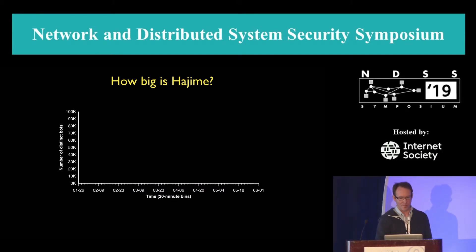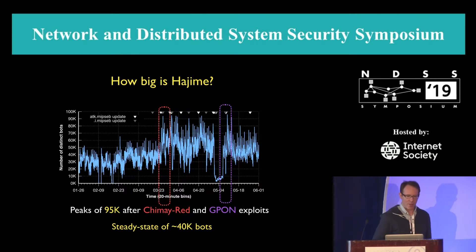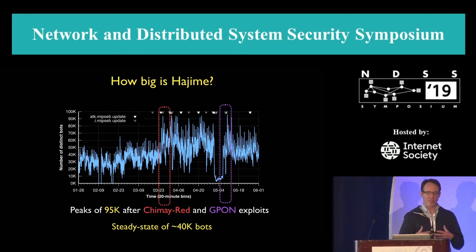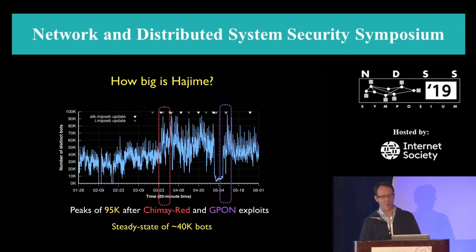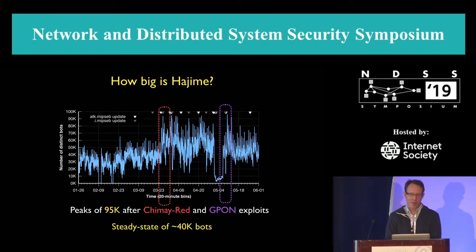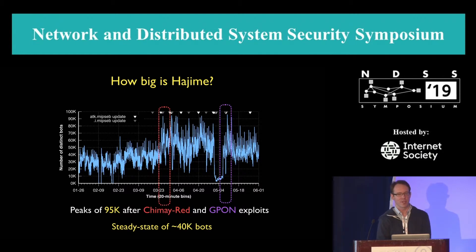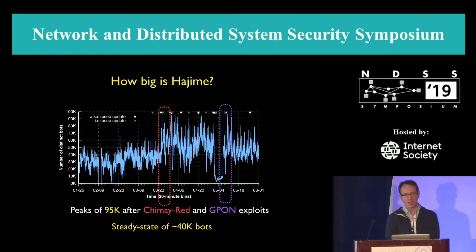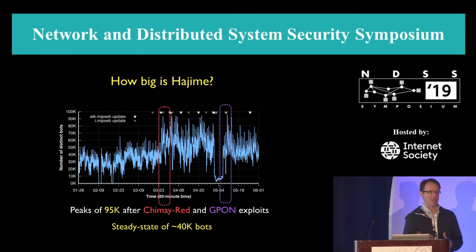So first, how big is Hajime? We plot on the Y axis the number of distinct bots — meaning distinct keys — and on the X axis time from January through May. We see Hajime starts with a steady state of about 40K, but then two exploit events — Chimay Red and G-Pon — double the population of the botnet. The bot master packaged both exploits only in the MIPS Big Endian architecture. Notably, both exploits were zero-days that were either leaked or publicized on the internet, and within a matter of days were incorporated into the ATKs by the bot master.